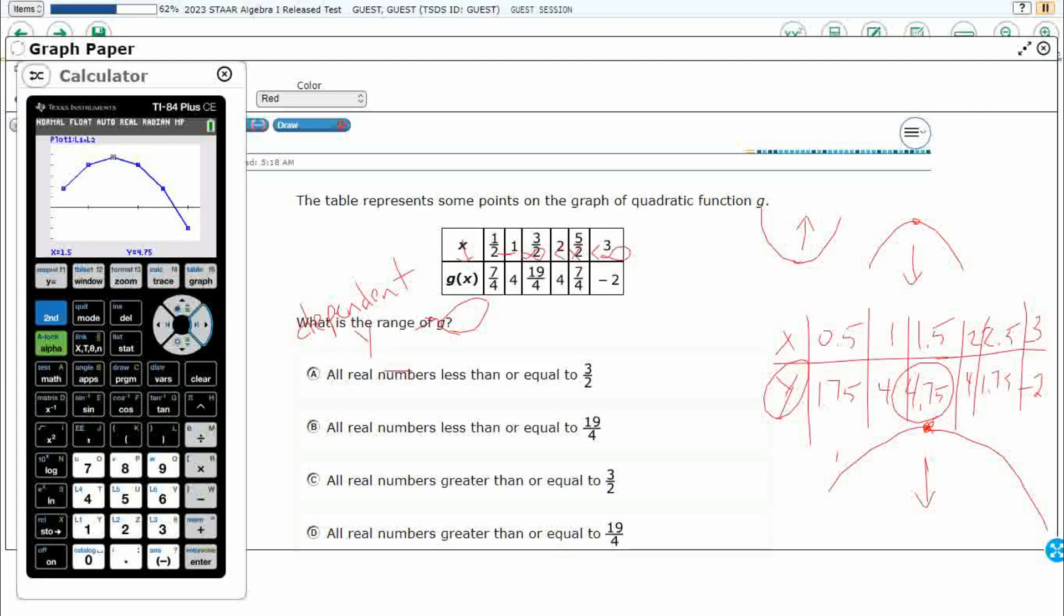It's a downward facing parabola and so that 4.75 really was going to be that 19 fourths. So all real numbers less than or equal to 19 fourths. Answer is B.